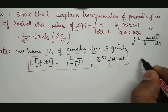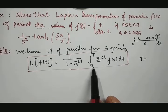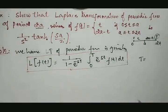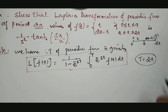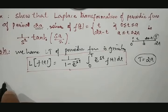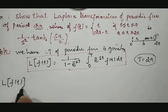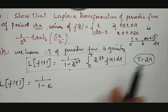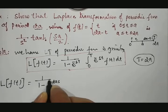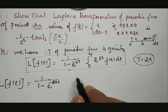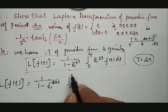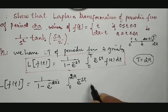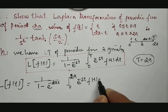Here, capital T is the period. The interval is 0 to 2a, so capital T equals 2a. Therefore, the Laplace transformation of f(t) equals 1 divided by (1 minus e raised to minus 2as), times the integral from 0 to 2a of e raised to minus st times f(t) dt. But f(t) splits into two parts: one between 0 to a and the other between a to 2a.